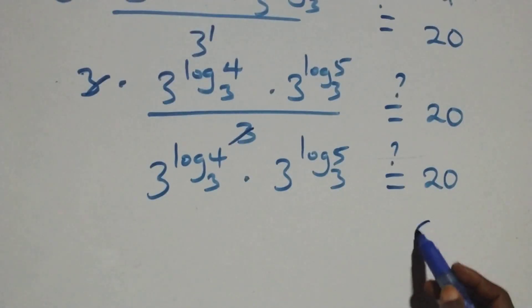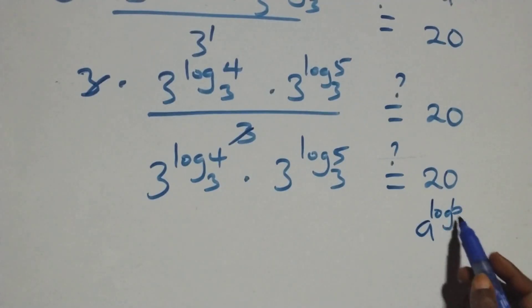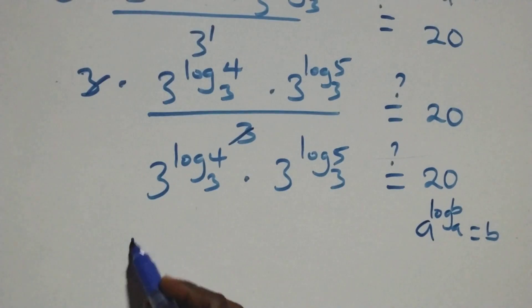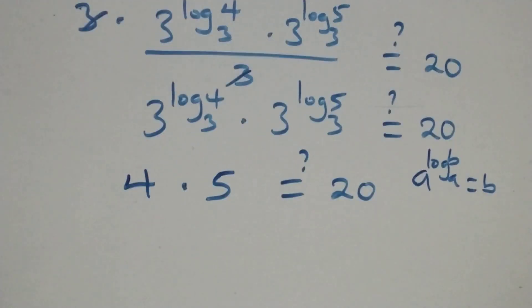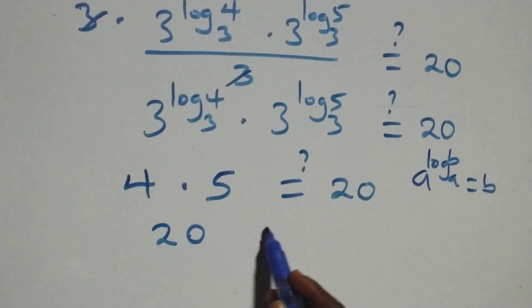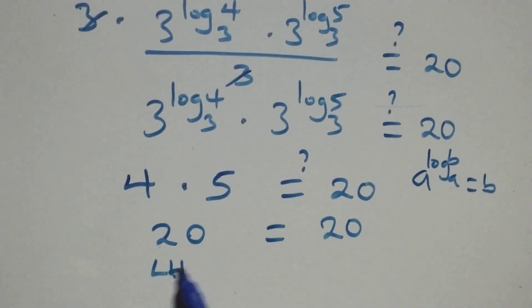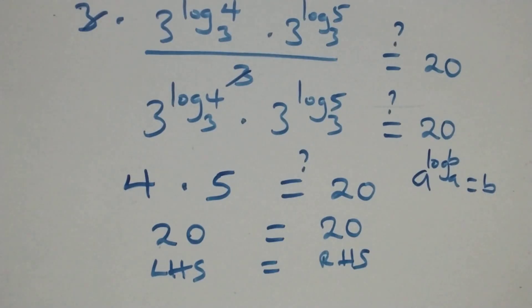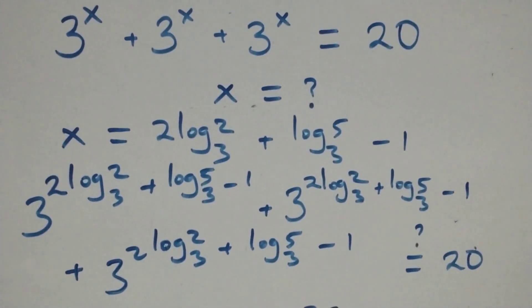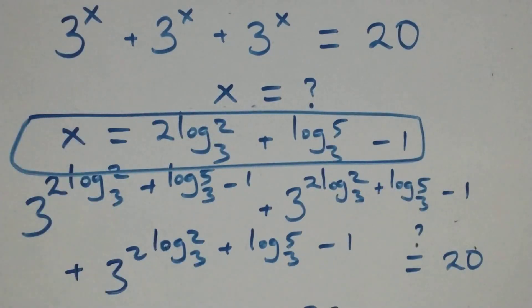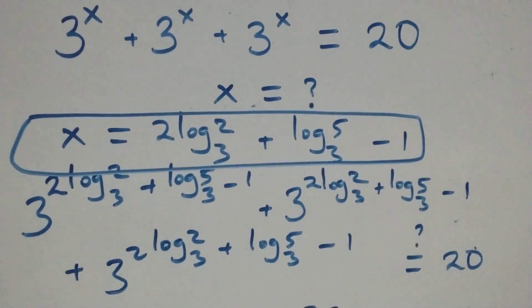Applying the identity a^(log_a b) = b, we get 4 times 5, which equals 20. The left-hand side equals the right-hand side. Therefore, we conclude that x equals 2 log₃2 plus log₃5 minus 1 satisfies the given problem. Thank you for watching — don't forget to subscribe, turn on the notification bell, share this video, give it a thumbs up, and leave a comment. See you next class, bye for now.